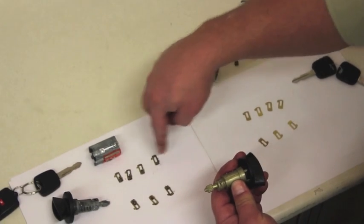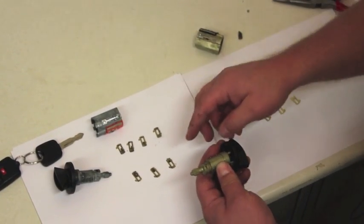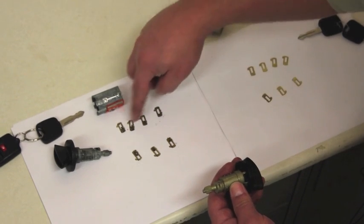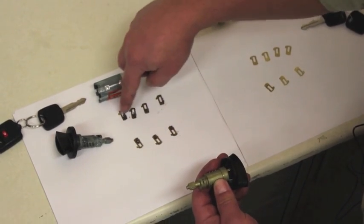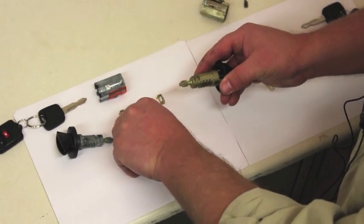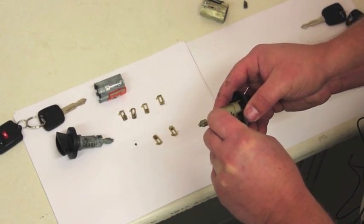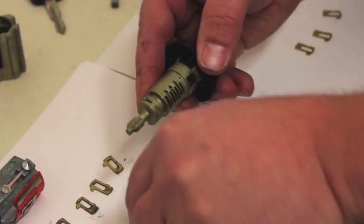Now we're going to go to our blanks that we removed from the previous lock cylinder, and we'll insert them in the same order. You can see I've got them lined up here, beginning to end, beginning to end as well. And we'll simply reinsert them in the order in which we removed them.